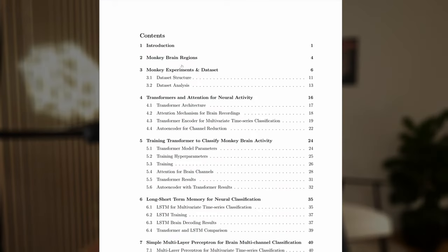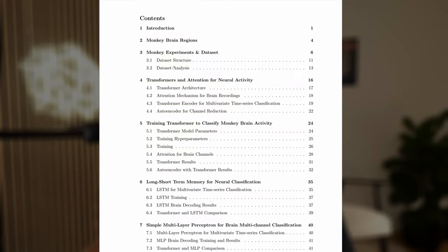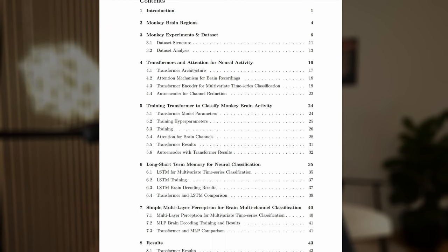Here we have the table of contents. I have the introduction, some basic theory about monkey brain regions, then we talk about the monkey experiments and also the datasets. Then we have dataset analysis and dataset structure, then the methods used - the main transformer model and also the attention mechanism for neural activity. I cover the basic theory about the transformer architecture and also the modifications I've done. I'm actually using a weighted double encoder based transformer model, so we have two encoders that are concatenated at the end with a weighting layer. We learn a weighting of what we pay more attention to, because we have both time-wise information and also channel-wise information when talking about multi-channel neural activity.